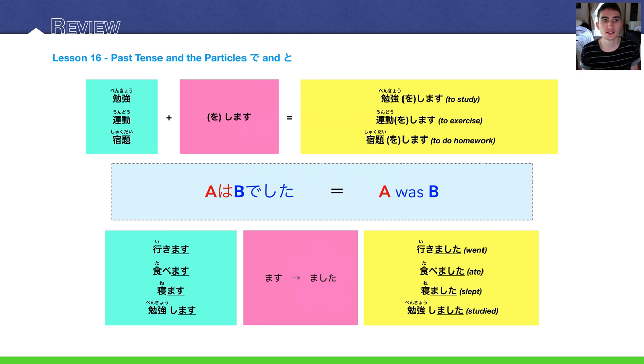And what is done usually are certain verbs. For example, benkyou, undo, shukudai - study, exercise, and homework. You can study, benkyou o shimasu. You can exercise, undo o shimasu. And you can do homework, shukudai o shimasu.